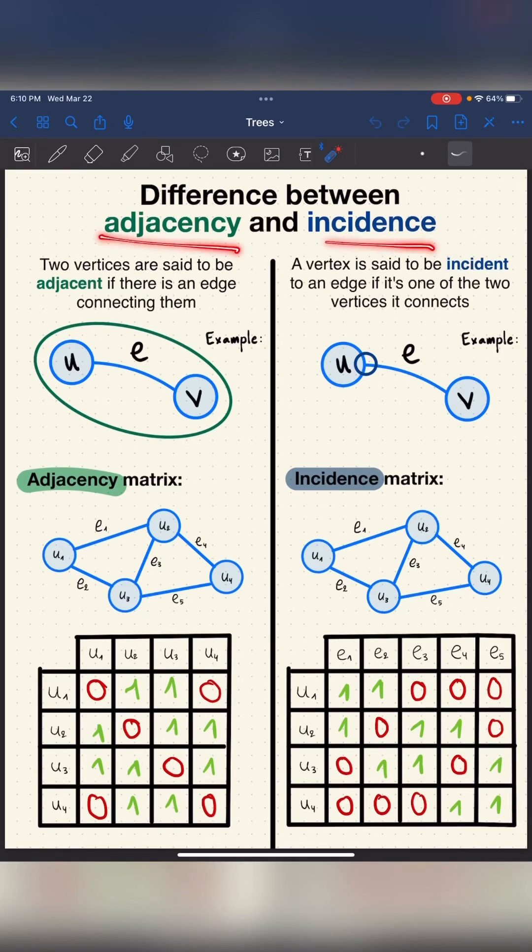The difference between adjacency and incidence in graph theory. Adjacency occurs between two vertices, for example here, u and v are adjacent, because two vertices are said to be adjacent if there is an edge connecting them.